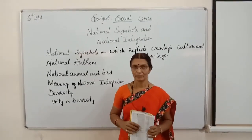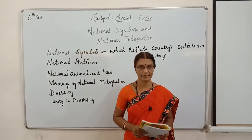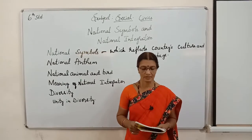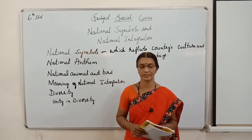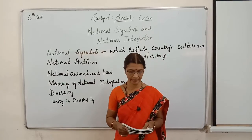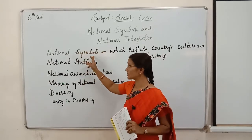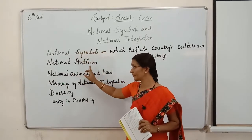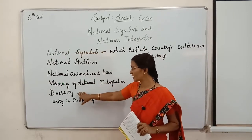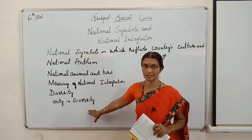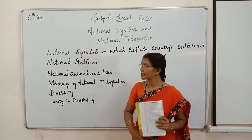Hello everyone, welcome to online class. Today I am going to explain a social lesson of 6th standard. The lesson name is National Symbols and National Integration. This is the second chapter of Civics. In this lesson, we are going to cover National Symbols, National Anthem, National Animal and Bird, the meaning of national integration, diversity, and unity in diversity.